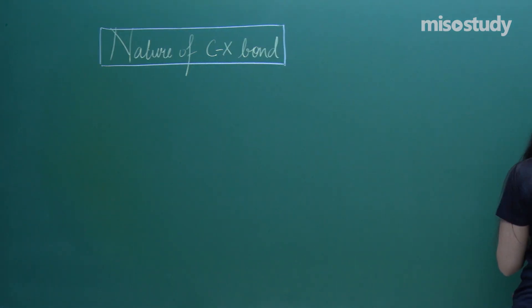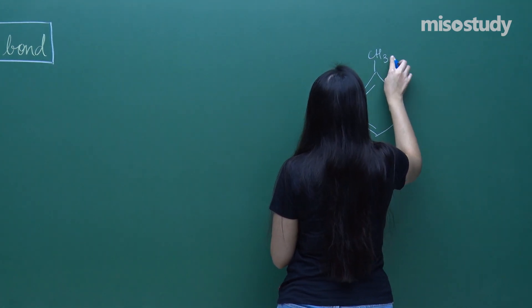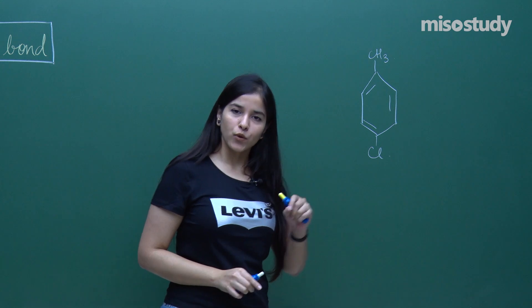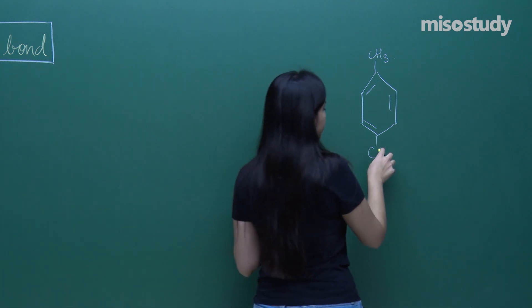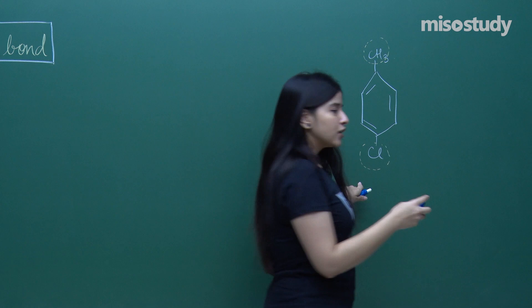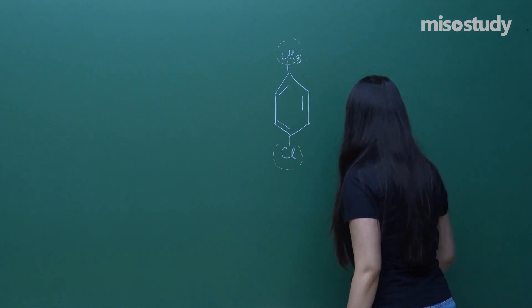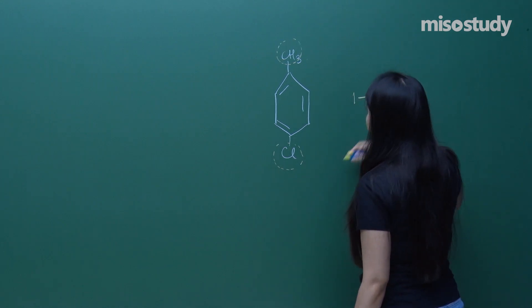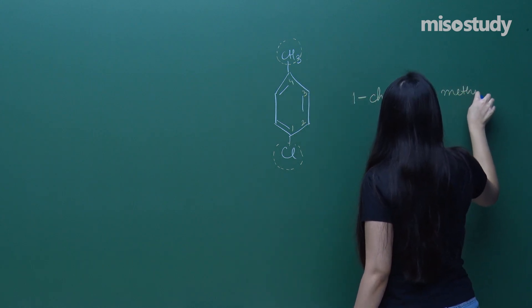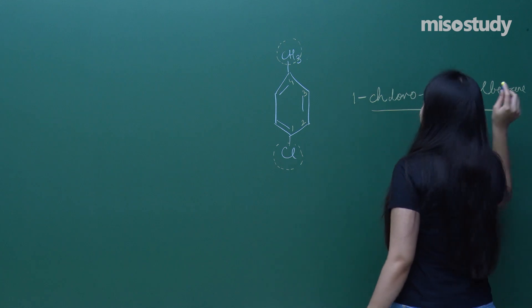So that was the compound we had decided the IUPAC name for. What was the IUPAC name? Depending upon the alphabetical order of the name of the substituents, this is methyl, this is chloro. So I had told you the name would be 1-chloro, 2, 3, 4, and 4-methylbenzene.